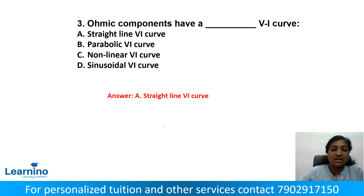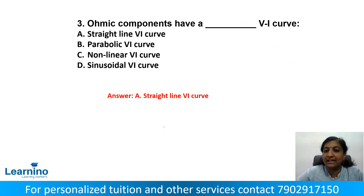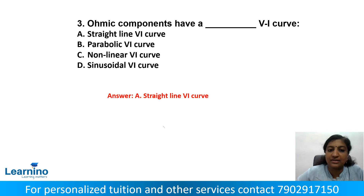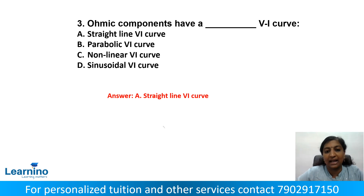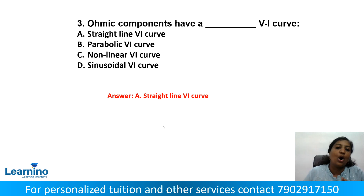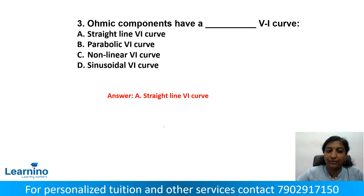Question number 3: Ohmic components have a straight-line VI (voltage-current) curve. Ohmic components have a linear voltage-current relationship. The correct answer is option A.